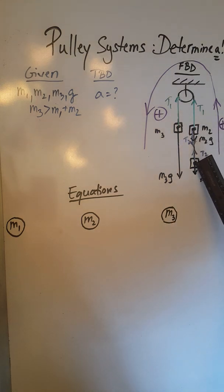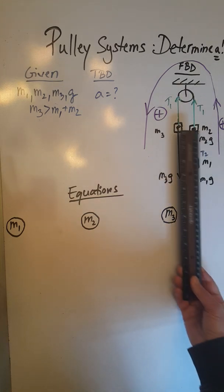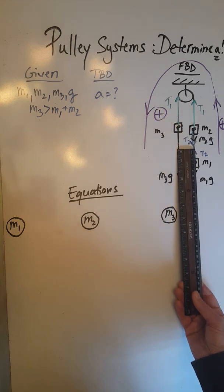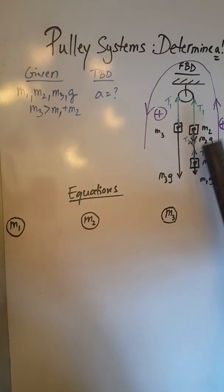And then this T2 here in blue must be the same as this T2 here in blue, because this is another string that's connecting M2 and M1. The pull is the same no matter where we measure it in magnitude. So T2 here seems to be three centimeters and this one also three centimeters, so we are good with checking the magnitudes of the tension forces all around.